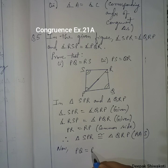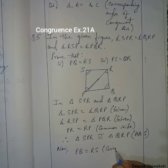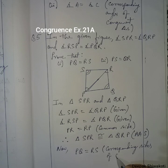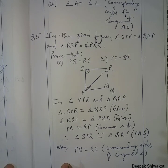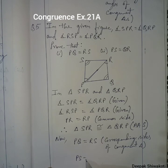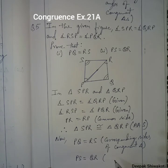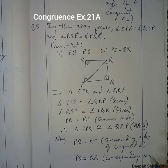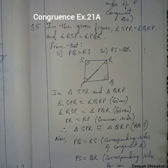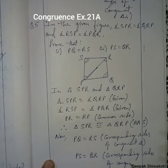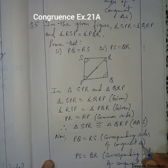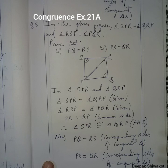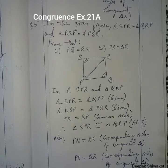Now we have to show: PQ is equals to RS — they are equal because they are corresponding sides of congruent triangles. And PS is equals to QR — similarly, the same reason: corresponding sides of congruent triangles. So Question Number 5 is done.